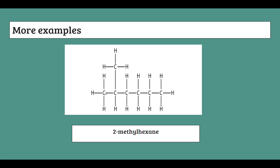To name the branched part: we number the main chain from carbon one to carbon six, and identify which carbon the branch is coming out of — in this case, carbon two. We then write the position number first, followed by a prefix for how many carbons are in the branch. Since the branch has one carbon, we use methyl. So the full name is 2-methylhexane.